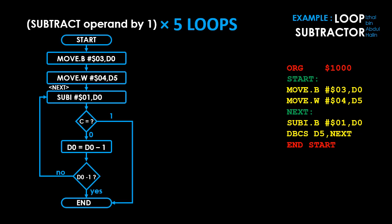When the program starts, the first instruction moves 3 into register D0. D0 holds the value we will be subtracting from, and at the end of the program it should be negative 2. The next instruction moves 4 into register D5. D5 will be our DBCS down counter. Since it is set to 4, we would expect it to terminate after 5 loops.